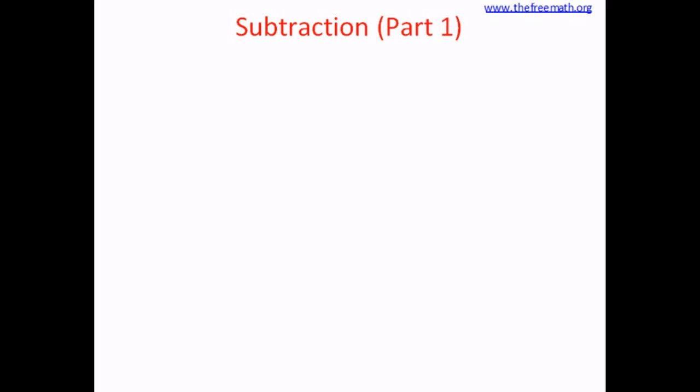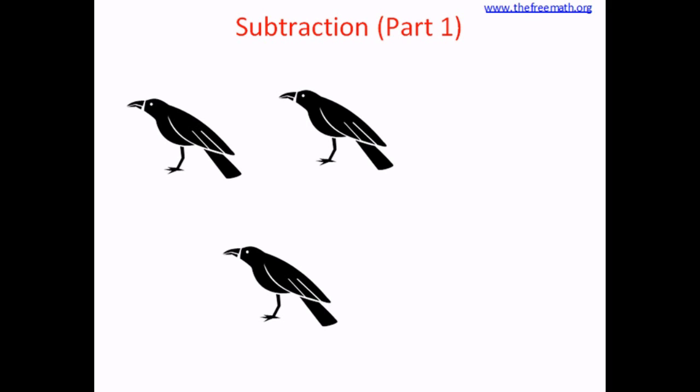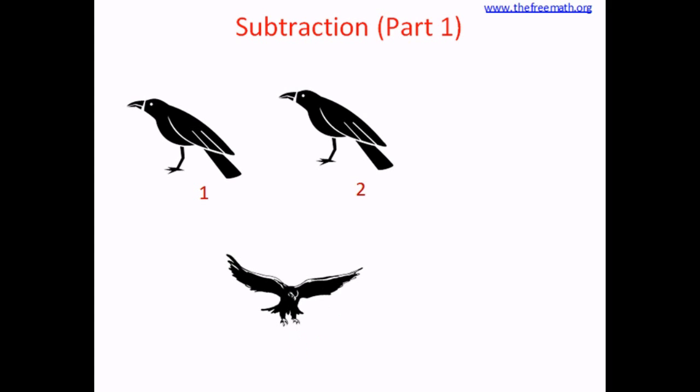Let's see what happens when things go away. Let's look at these three crows — how many crows are here? One, two, three. We have three crows. Now one crow flies away, so we are left with two crows. How many? One, two. We have two crows now.